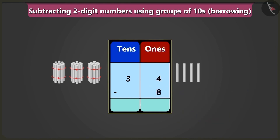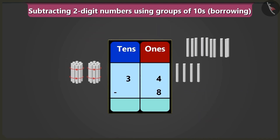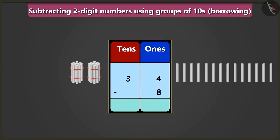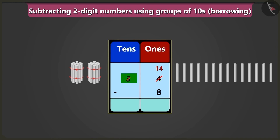We cannot subtract a big number from a small number. So we will borrow one ten from the number in the box of tens. That means the number in the place of ones can borrow one ten from its neighbor. Now we will write one ten and four ones — fourteen — in the box of ones. And we will write two tens instead of three tens in the box of tens.